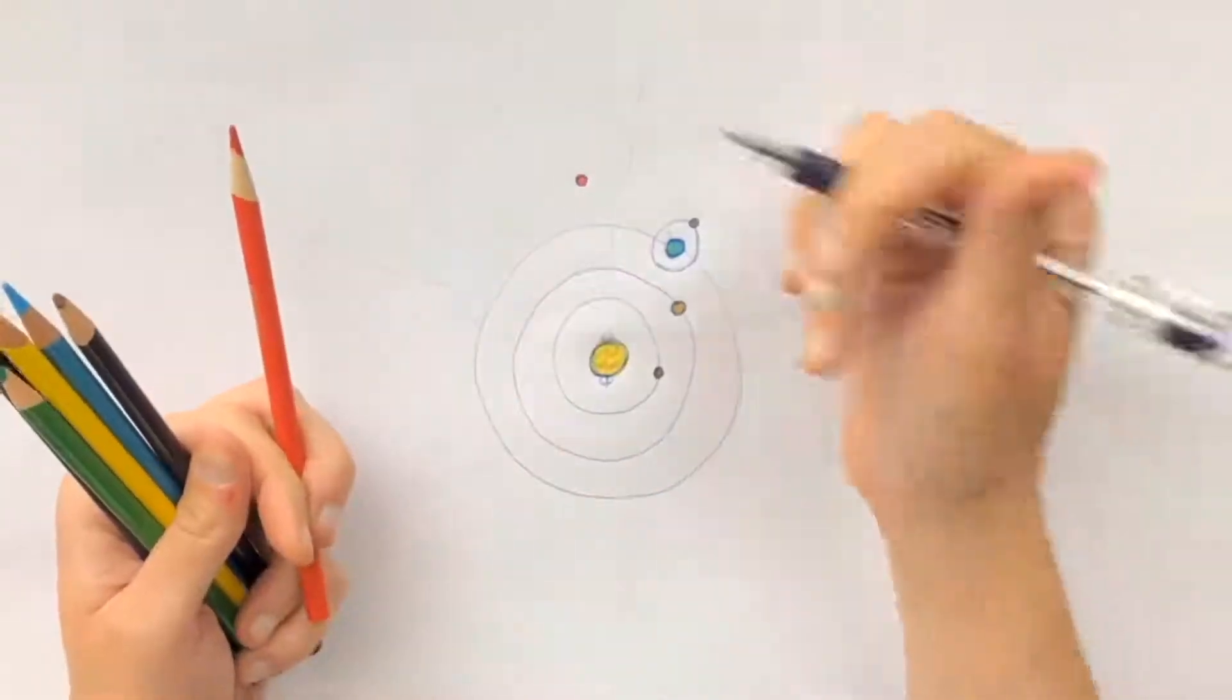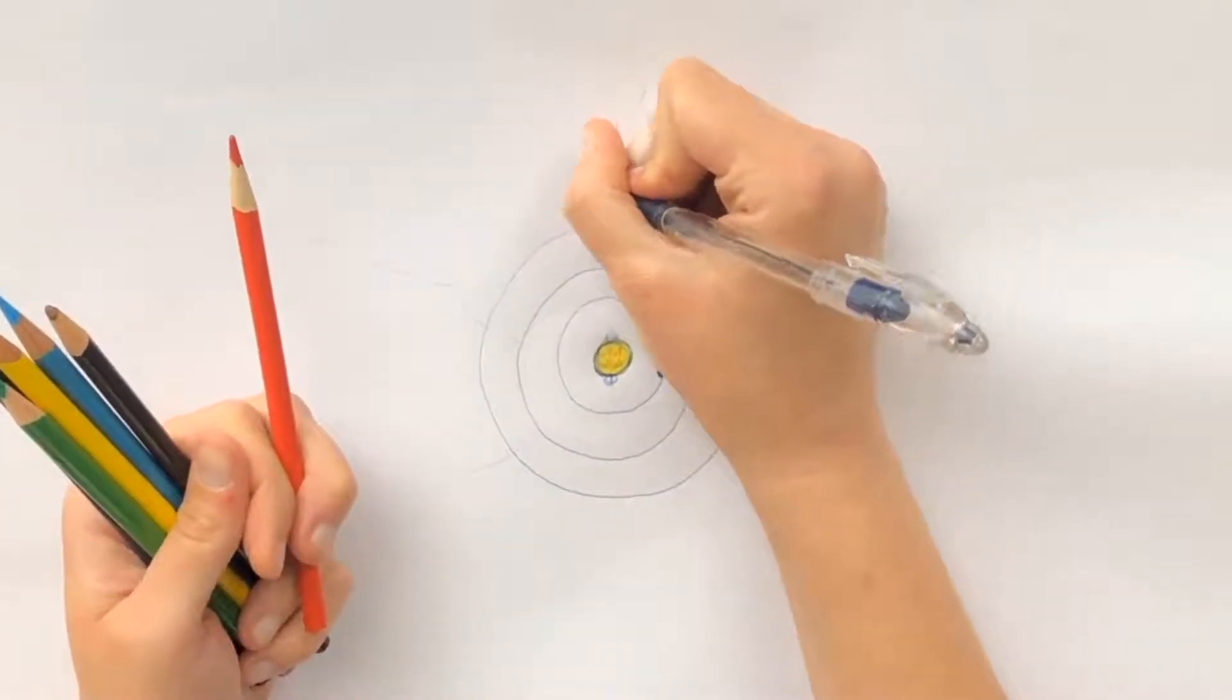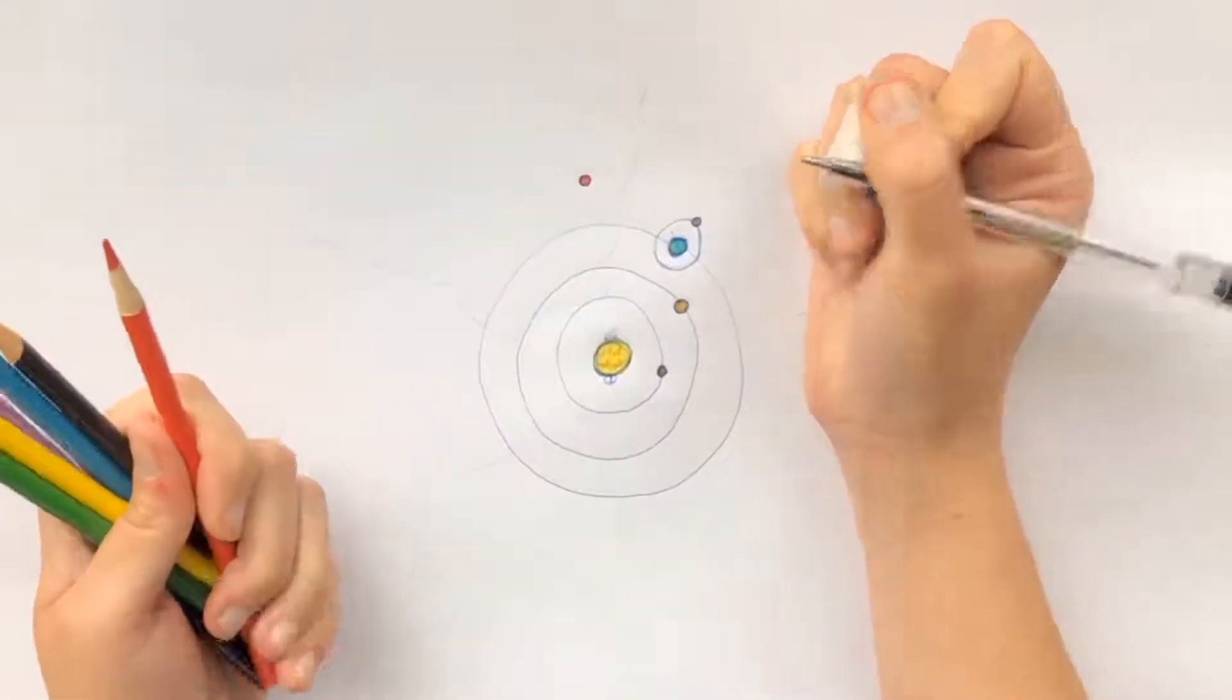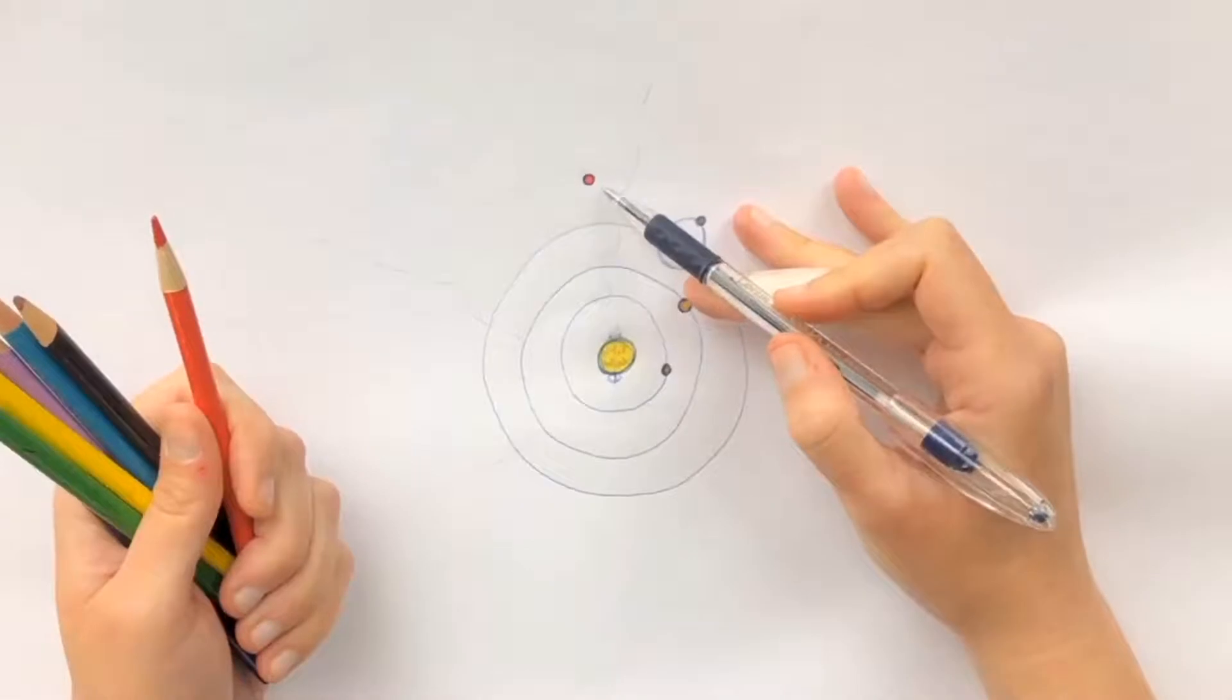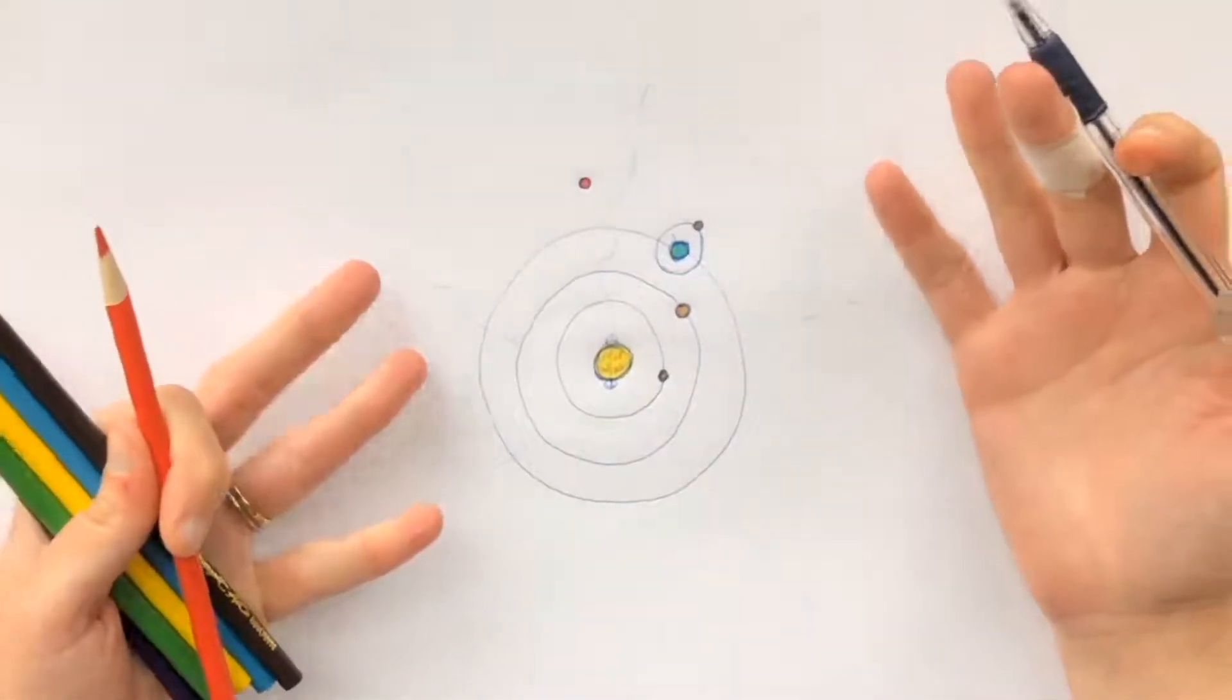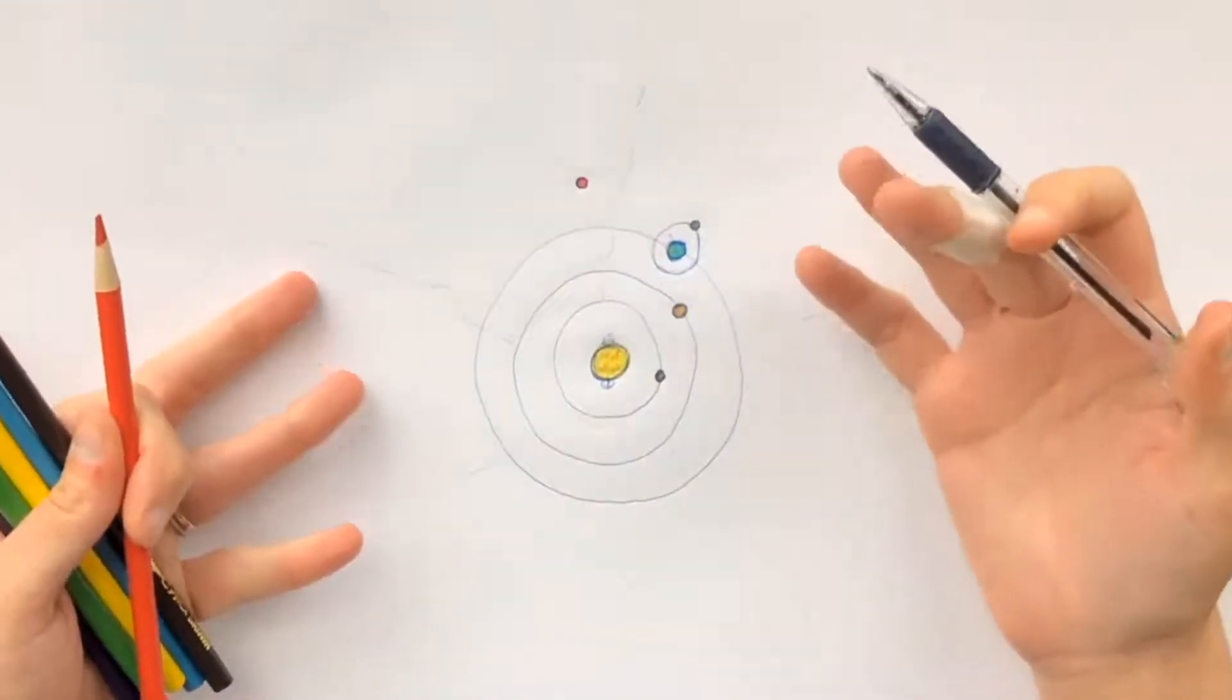It was named after the god of war because it is colored red, and that red color actually comes from iron oxide, which is basically rust that's just all over the surface of it.